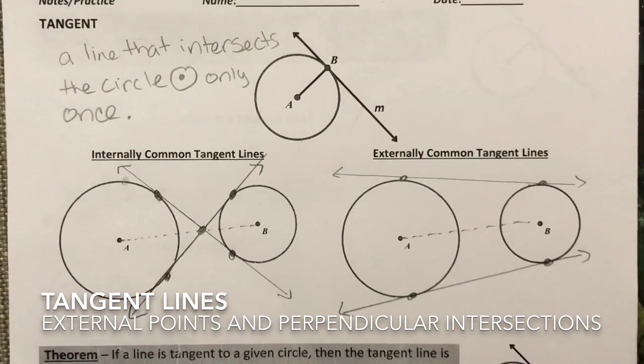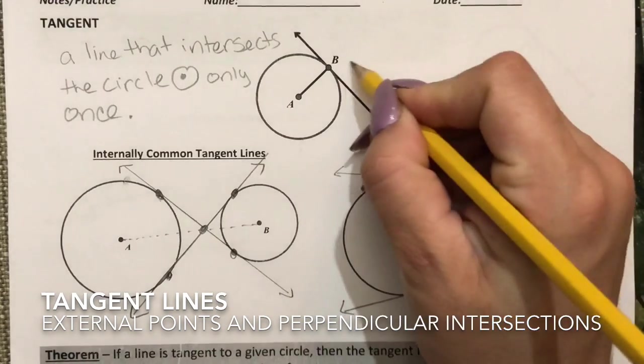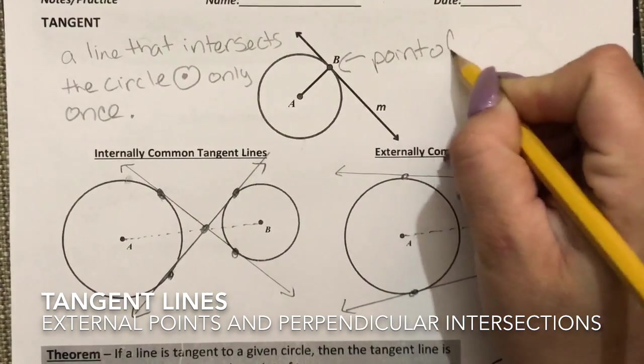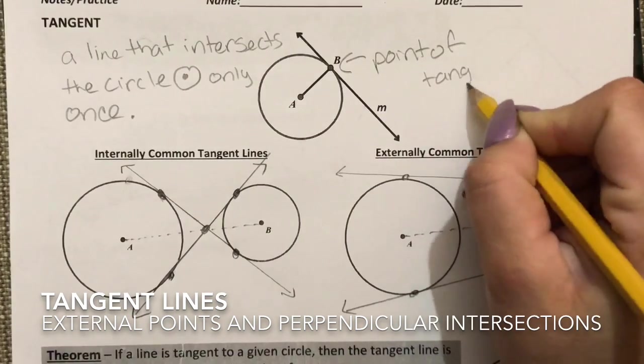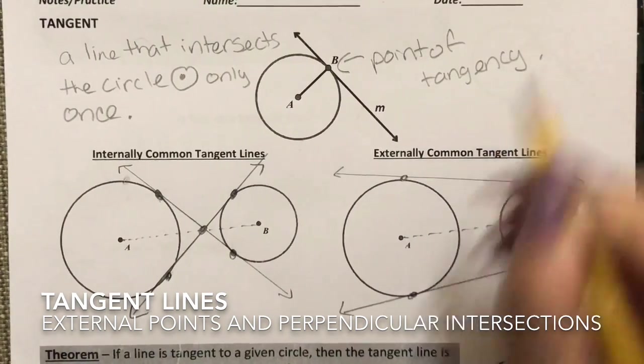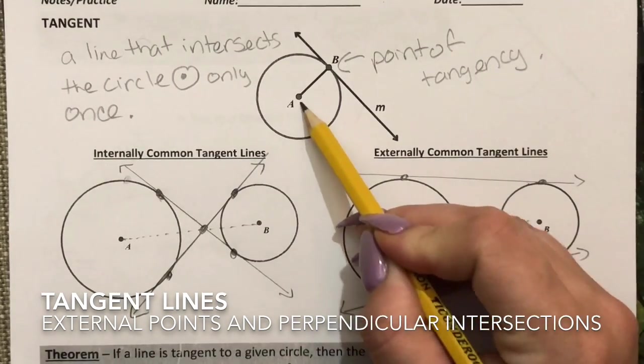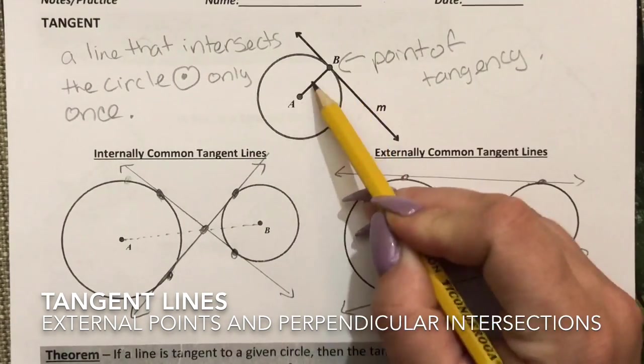You also want to remember we have the point of tangency and something special happens here. So from A to B I have what we call the radius.